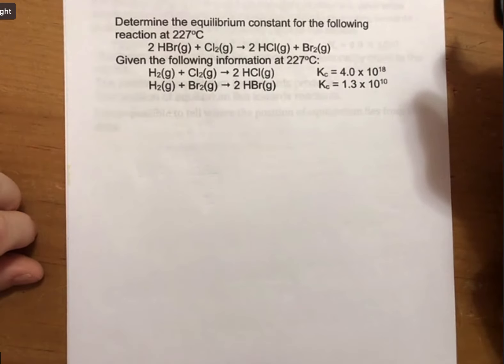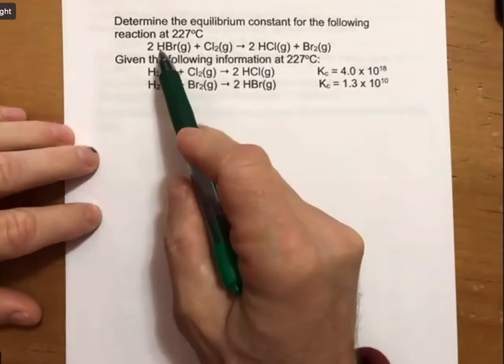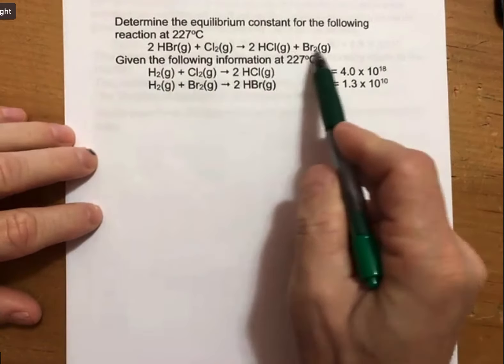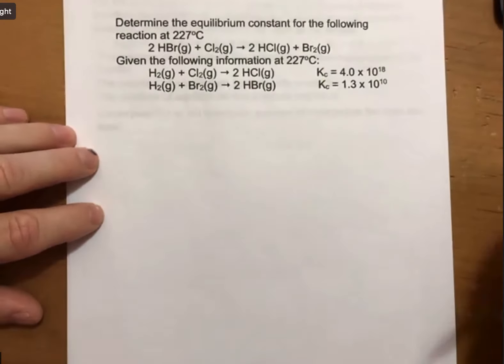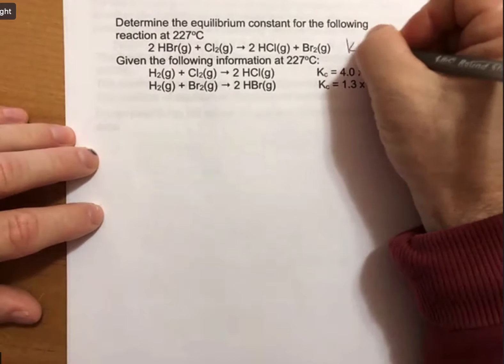This problem says determine the equilibrium constant for the following reaction at 227 degrees Celsius. We have this reaction here, we're trying to determine its equilibrium constant, and we'll call that equilibrium constant Kc.